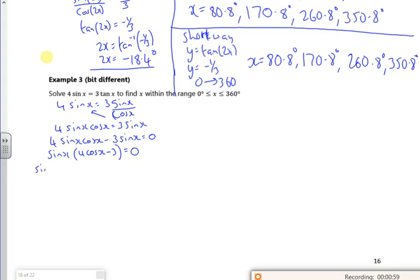So I've got sin x equals 0, or I've got 4 cos x minus 3 equals 0. So cos x is 3 quarters. Going back to this one, the inverse cos of 3 quarters is 41.4 I think.